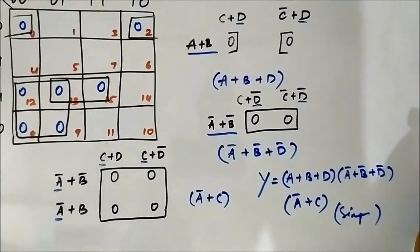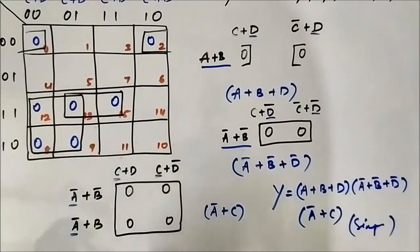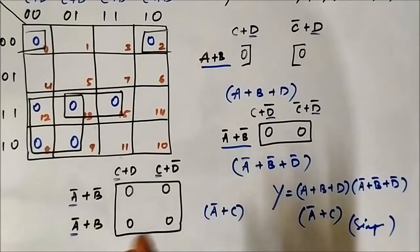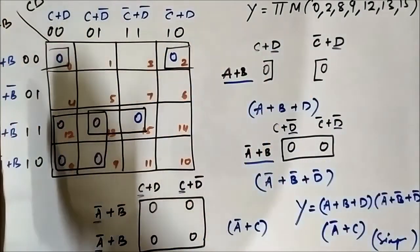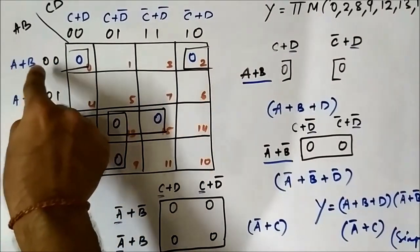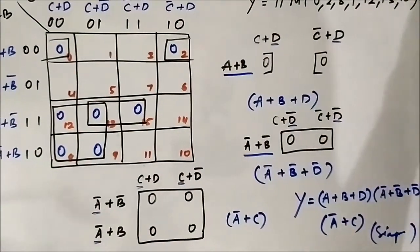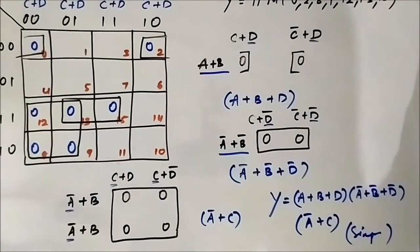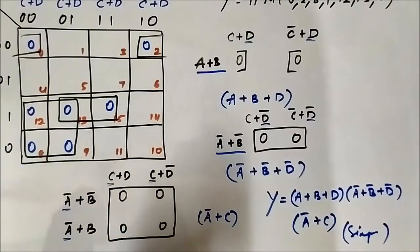This is the simplified Boolean expression for the first question. The same technique we used in the four variable SOP kmap applies here — the difference is that it is in product of sums form, and the cell labeling for 0, 0, 0, 1, 1, 1, 1, 1, 0 is different, but everything else — the grouping technique and identifying common variables — is the same. Watch POS and SOP videos, try to find the difference, and practice as many problems as possible to get a hold of these things.